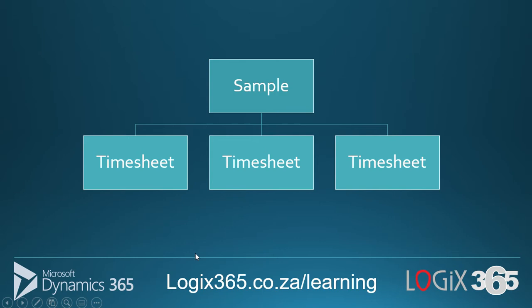This is the data structure we're going to follow — referred to as one-to-many. We have one sample entity and many child records. Think of it as a job card with time entries connected to it. One parent entity and many child entities, each connected directly back to the parent. This is important especially for rollups, where a rollup field on the parent will fetch values from each child record and return a total.